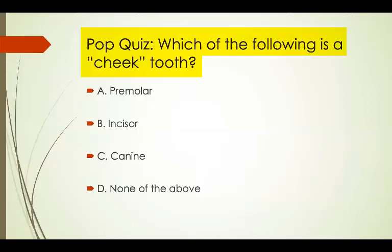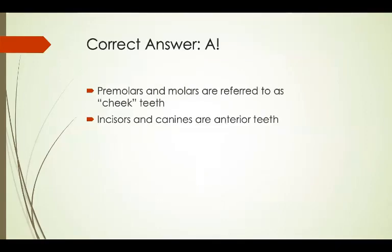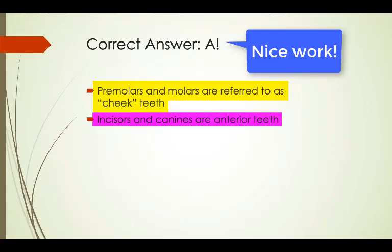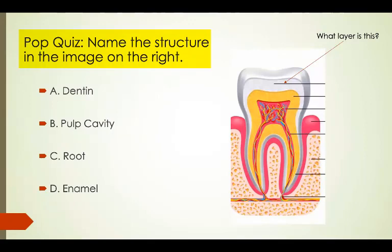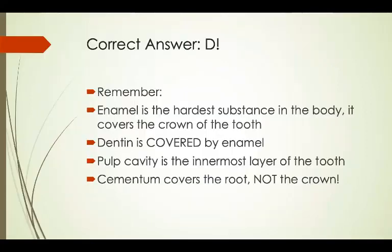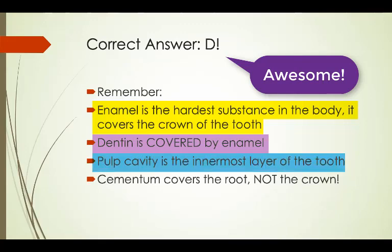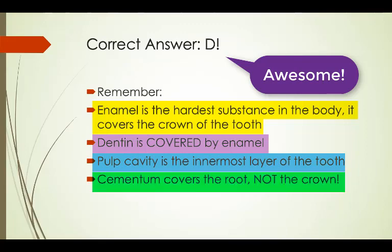Which of the following is a cheek tooth? The correct answer is A. Remember that premolars and molars are referred to as cheek teeth, while incisors and canines are referred to as anterior teeth. Name the structure in the image on the right. The correct answer is D. Enamel is the hardest substance in the body and it covers the crown. Dentin is not correct because it is covered by enamel. Pulp cavity is not correct because it is the innermost layer, and cementum covers the root, not the crown.